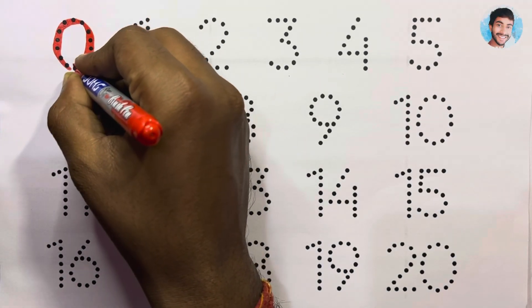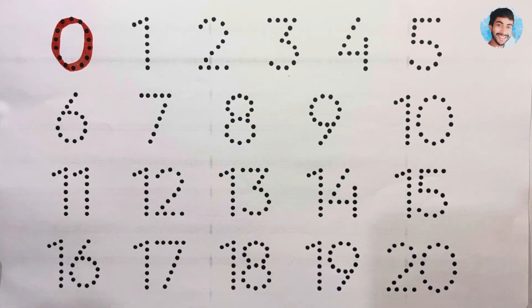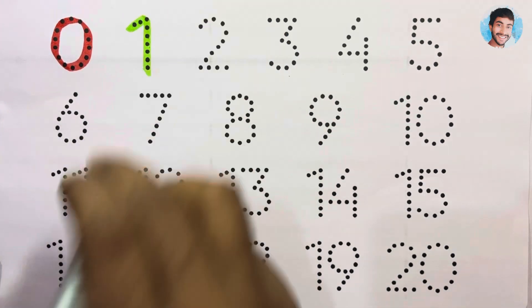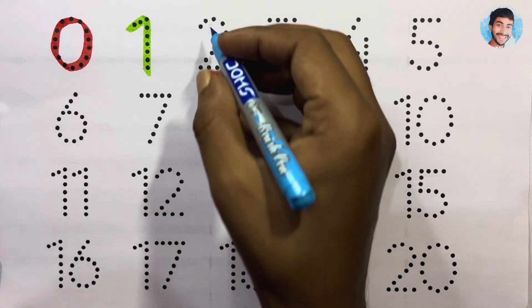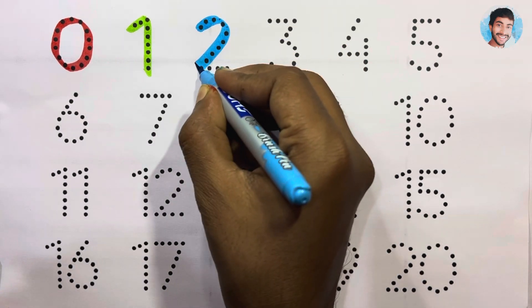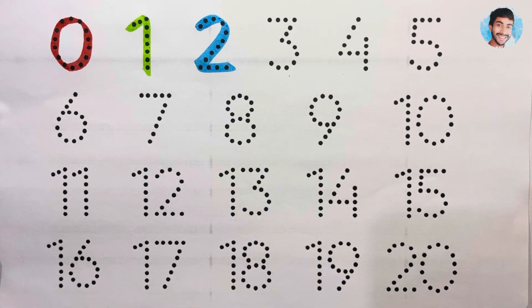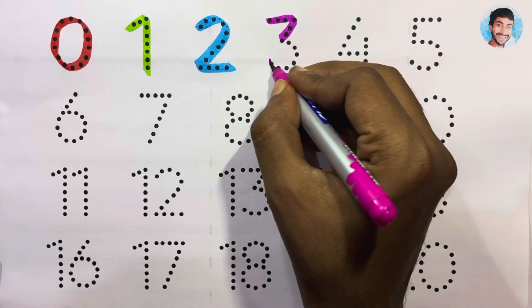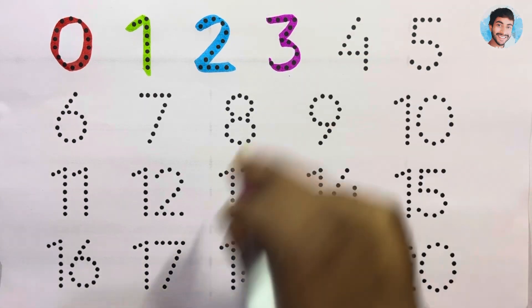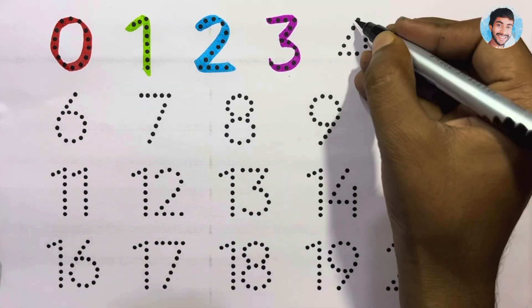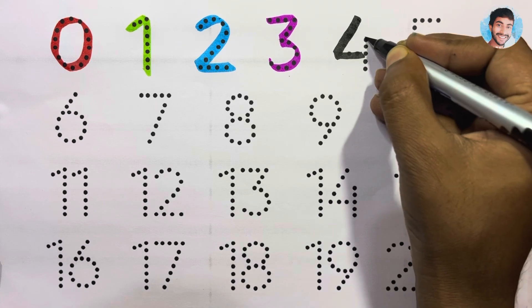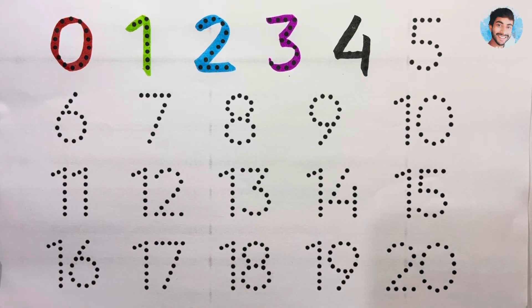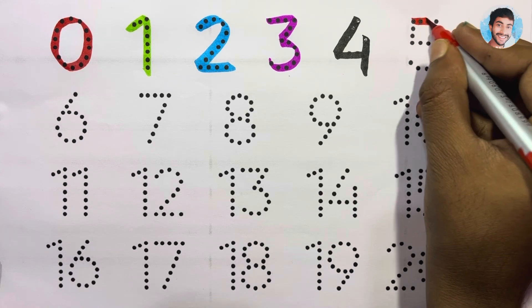Zero. One — Green color. Two — Sky blue color. Three — Pink color. Four — Black color. Five — Red color.